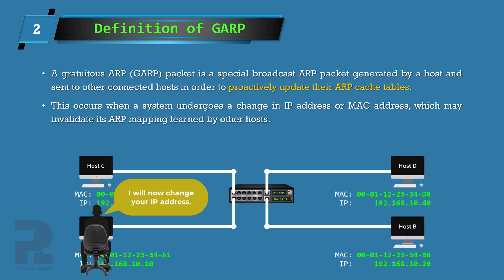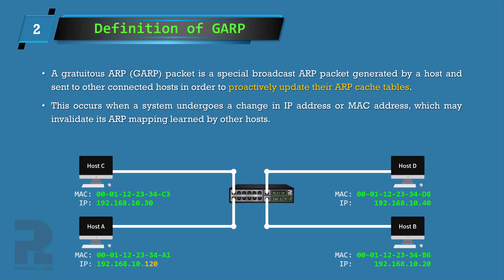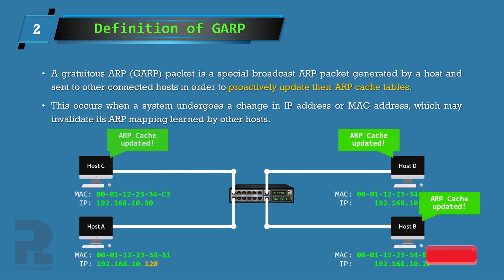This is because, from the moment a host's IP address or MAC address changes, its ARP mapping present in the ARP cache tables of connected hosts may become invalid. Some useful applications of the Gratuitous ARP message will be seen in this video.